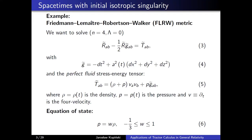The metric is fully determined except for one scalar function a, which is just a function of one coordinate t. For the stress-energy tensor, I'm assuming it has a perfect fluid form visible in equation 5, where we have two additional functions: rho, the fluid's density, and p, its pressure — both functions of time t only — and v is a one-form corresponding to the fluid's four-velocity, which is just ∂_t. One more thing needed is the equation of state, which in this context is a relation between the two scalar functions rho and p, visible in equation 6.